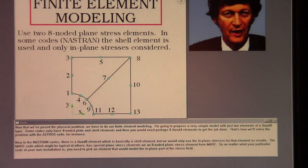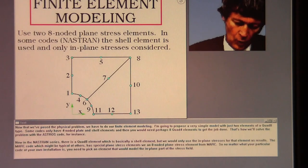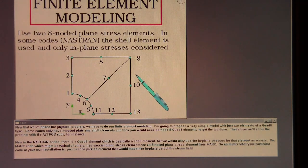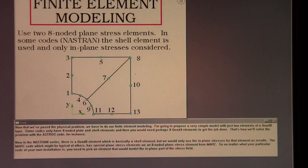Now that we've posed the physical problem, we have to do our finite element modeling. I'm going to propose a very simple model with just two elements of a quad eight type. Some codes only have four-noded plate and shell elements, and then you would need perhaps eight quad four elements to get the job done. That's how we'll solve the problem with the Astros code, for instance. Now in the Nastran series, there is a quad eight element which is basically a shell element, but we would only use the in-plane stresses for that element as results. The MARC code, which might be typical of others, has special plane stress elements, so we use an eight-noded plane stress element for MARC. So no matter what your particular code at your own installation is, you need to pick an element that would model the in-plane part of the stress field.